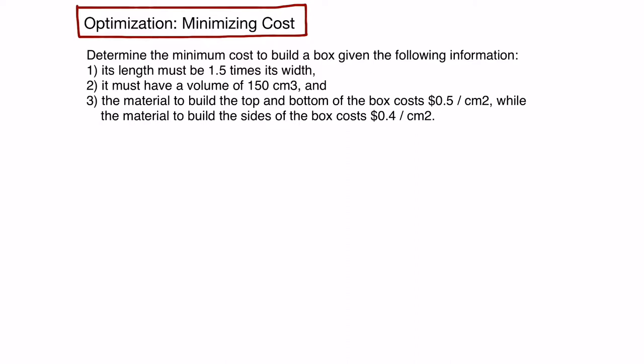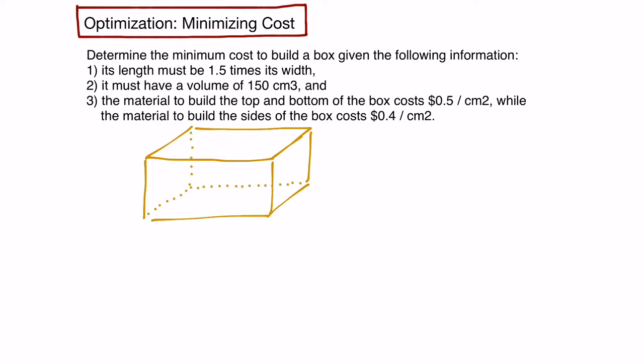In this optimization question, we have to determine the minimum cost to build a box given the following constraints. Let's start by drawing a diagram to visualize the situation. So here's our box, and this box will have a length, a width, and a height.